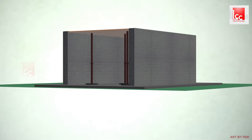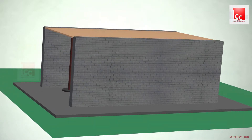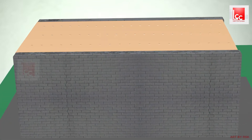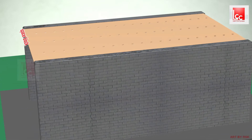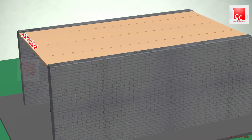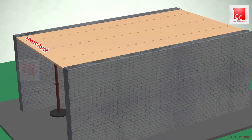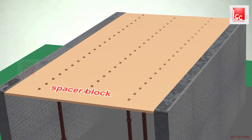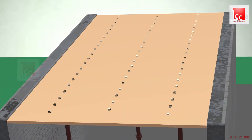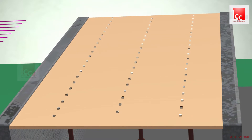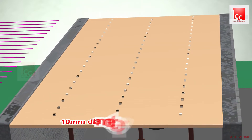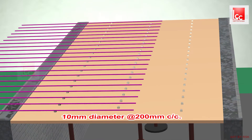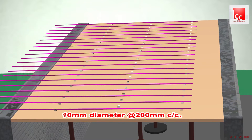After completing the formwork, we will place the concrete spacer blocks. Now we will place the main bar of 10mm diameter at the rate of 200mm center to center.